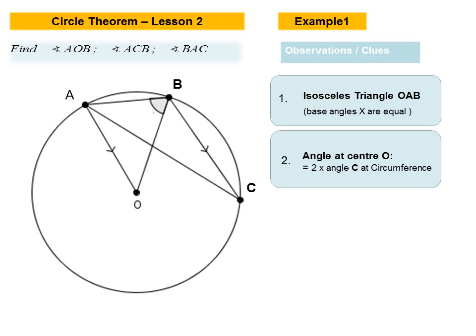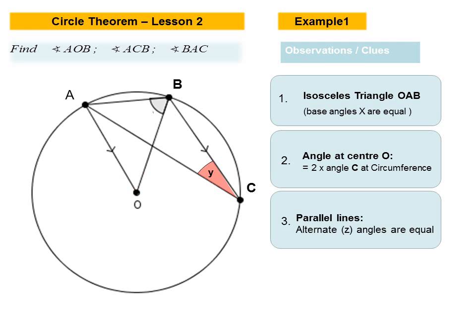So we can apply the angle at the center theorem, where the angle at the center is twice that at the circumference. So if the angle at O is 2Y, then the angle at C would be Y.